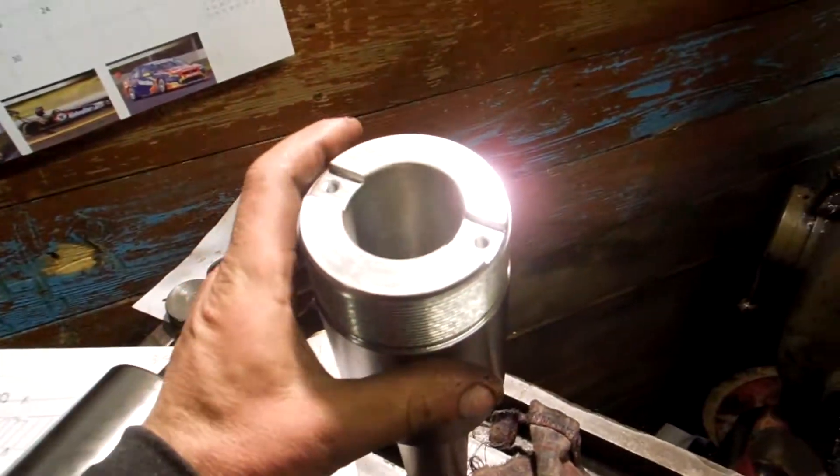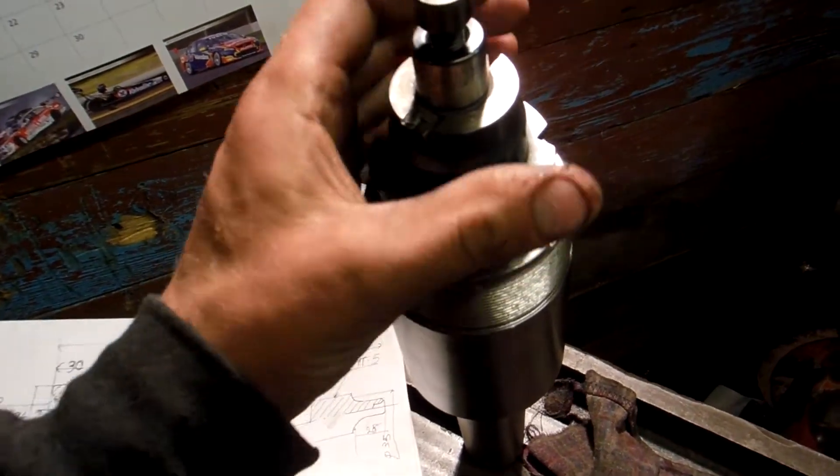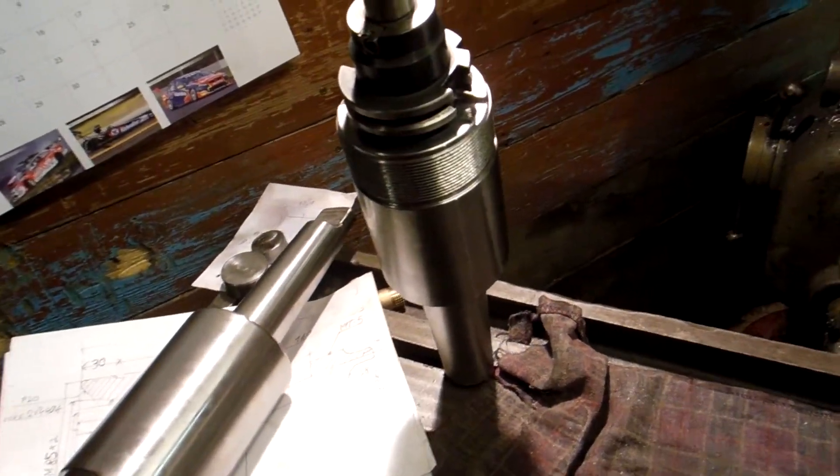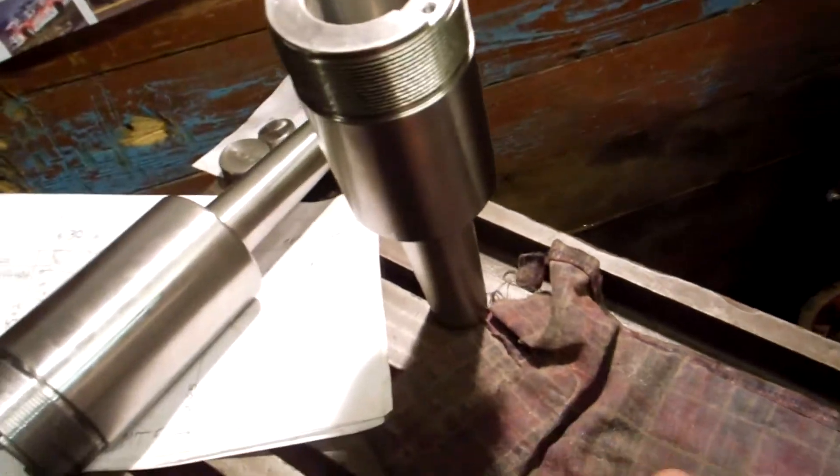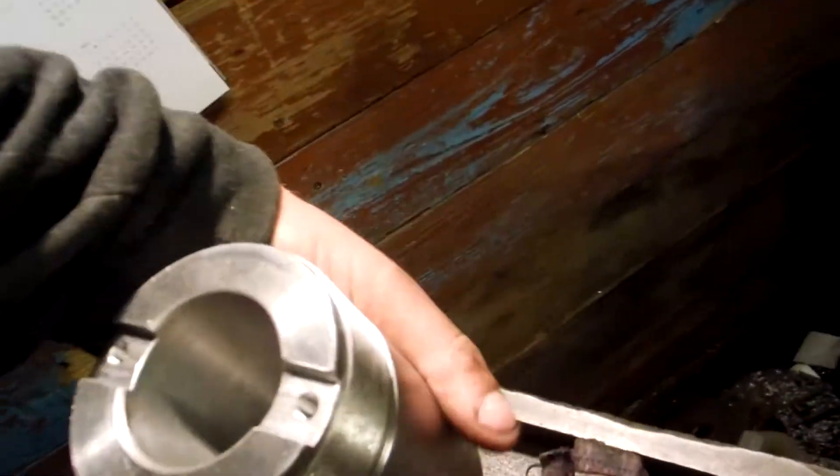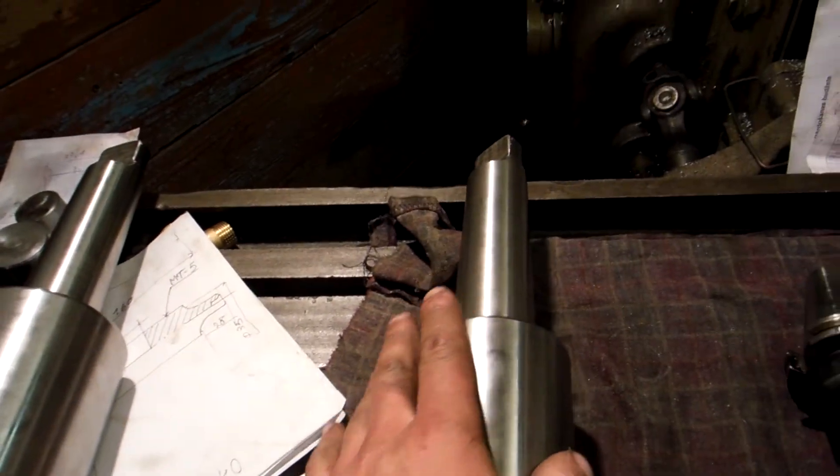Also here we can see a thread and for here will be a custom nut what will hold this tools right here. And then this way I can buy these adapters, these two I will use for my horizontal borer and then this way I can use my machines more.